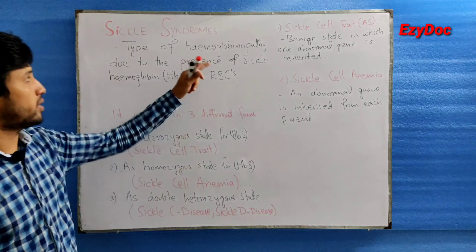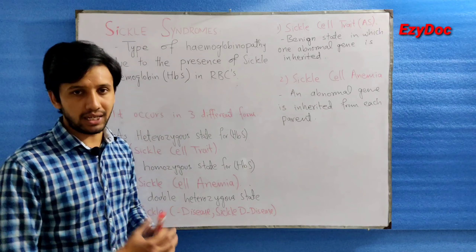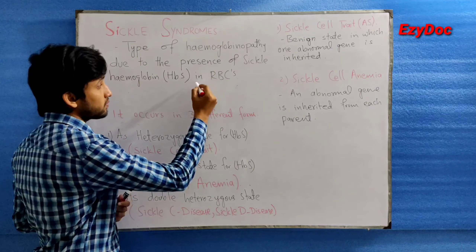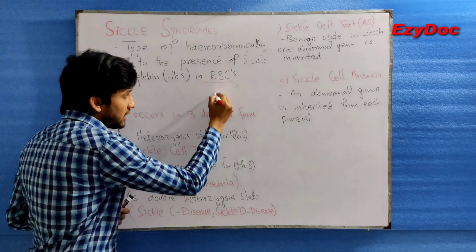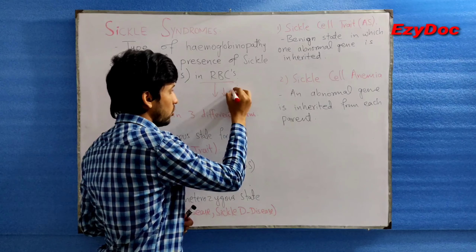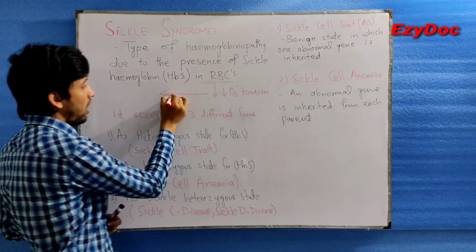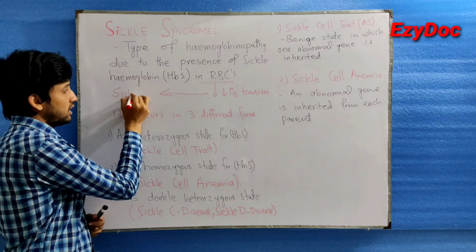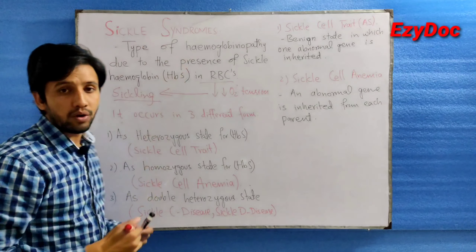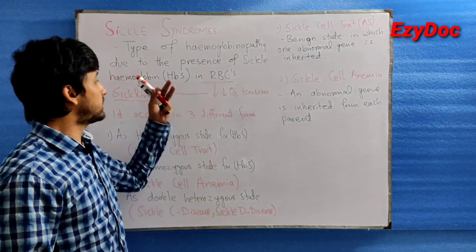Sickle syndrome is a type of hemoglobinopathy which is due to the presence of sickle hemoglobin in the red blood cells. When these RBCs are exposed to low oxygen tension — that is, decreased oxygen tension — they will result in the sickling of the RBCs. This sickling of RBCs is seen in the sickle syndrome.